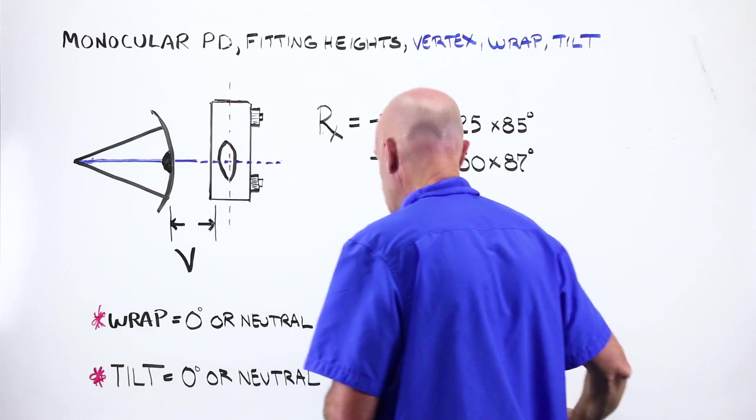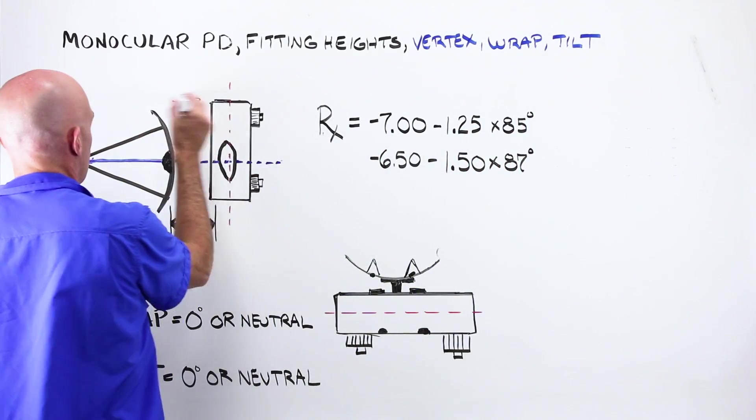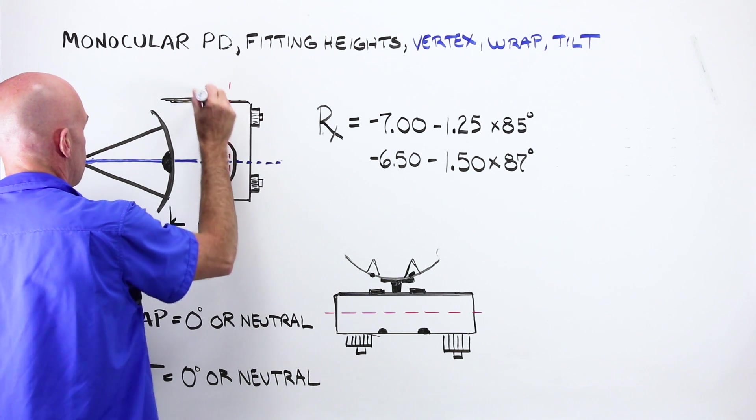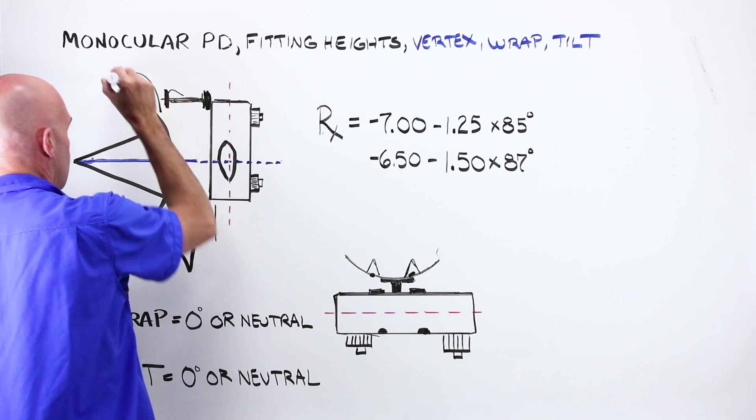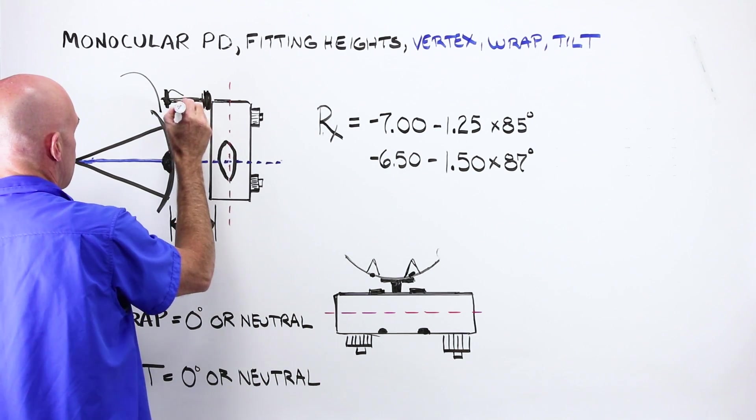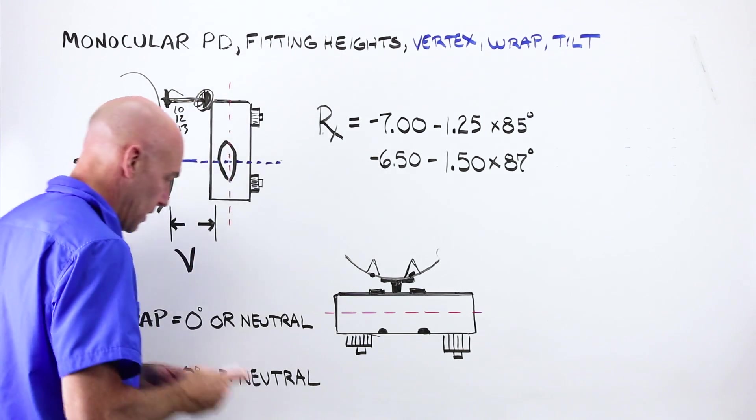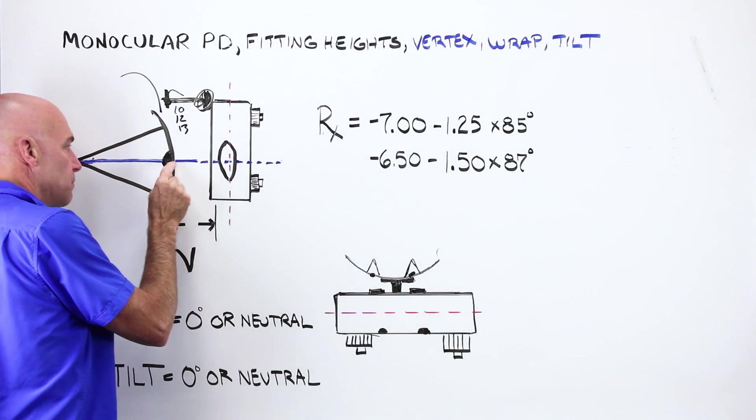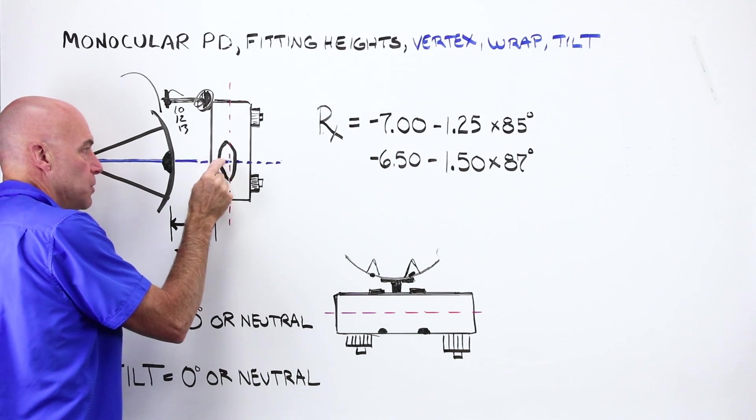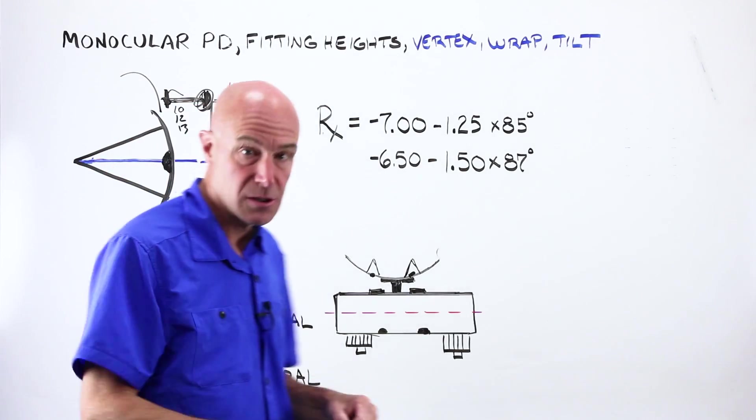Vertex can be dialed in. There's my forehead rest. And this could be 10, 12, 13. You can see there's a dial here tells me how far the front of my cornea is to the front of this beautiful perfect glass lens that's inside the phoropter.